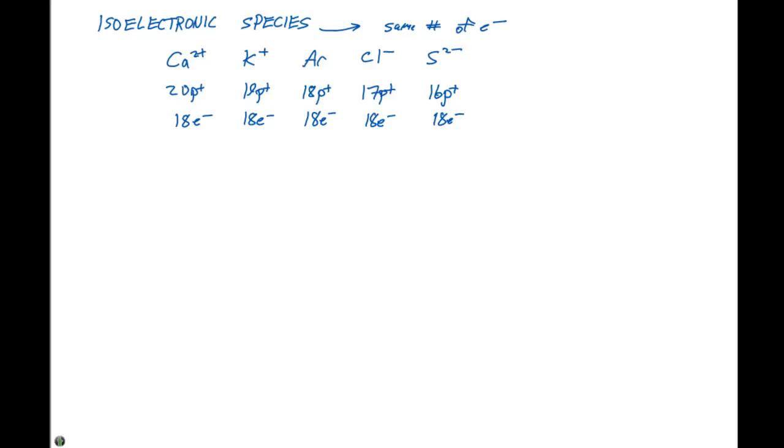So if we look at calcium two plus, potassium plus, argon, chloride minus, and sulfide two minus, we see that each of these have a different number of protons but the same number of electrons.